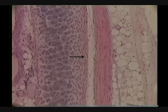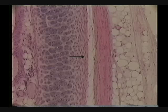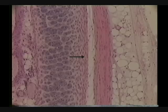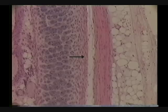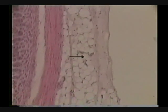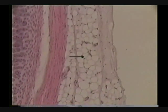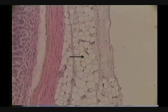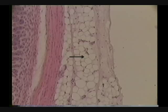Identify the tissue indicated by the pointer. The tissue is dense white fibrous connective tissue, irregularly arranged. Identify the tissue indicated by the pointer. The tissue is adipose.